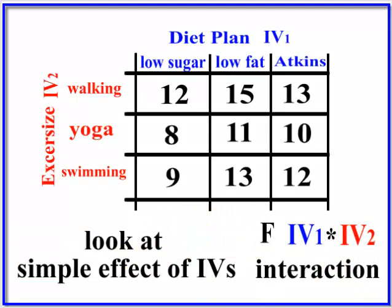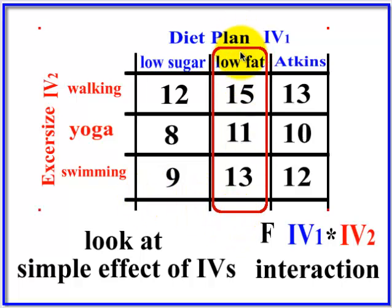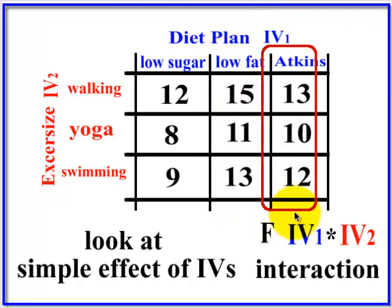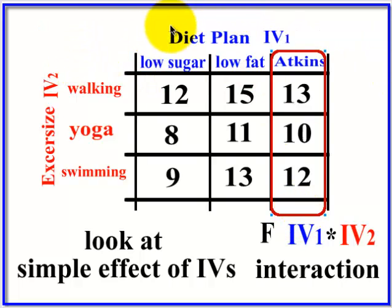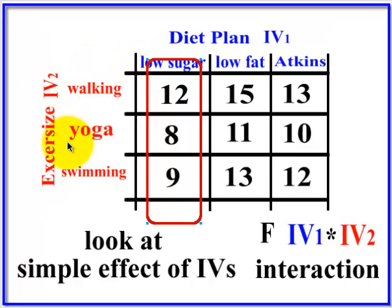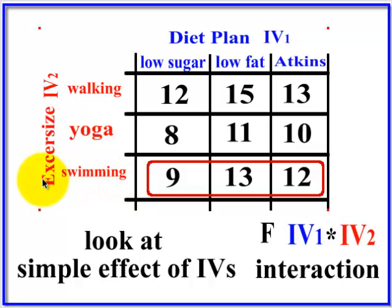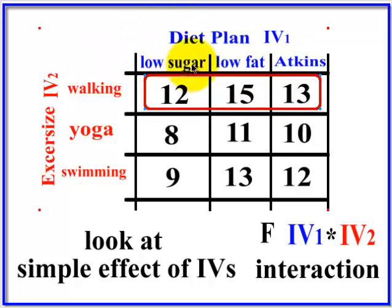When there is a significant interaction, we look at the simple effects of the IVs. That means you pick one level of one IV and compare it to all three levels of the other IV — you rerun your ANOVA using just that subset of data. For example, I could look at just the low fat group on the diet plan and see if there's a significant difference between walking, yoga, and swimming at that level. Or I could look at the simple effect of swimming across all the diet plans, or the simple effect of walking across all three diet plans.